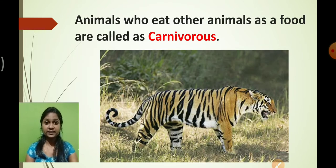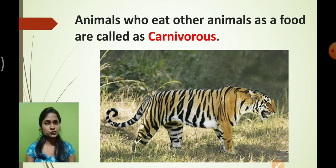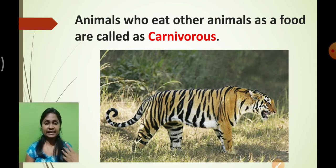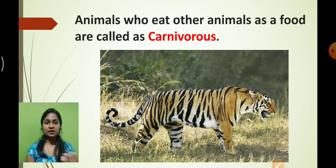On the other hand, there are many types of animals who eat other animals as food material. These animals do not consume plants — they directly attack smaller animals for food. We call such animals carnivorous animals. Examples include tiger, lion, leopard, eagle, and snake. Make a list of carnivorous animals as well.